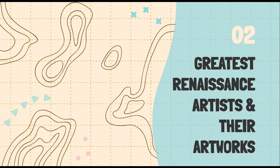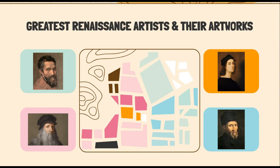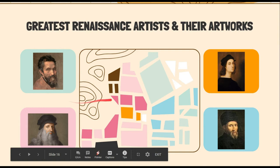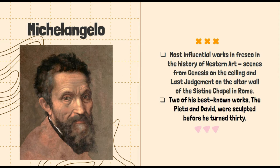Let's proceed to the greatest Renaissance artists and their artworks. We will discuss four artists together with their artworks. Number one, we have Michelangelo. Number two, Leonardo da Vinci. Number three is Raphael. And the last artist is Donatello. We will discuss a summary of their life as an artist and their artworks. Michelangelo is an Italian sculptor, painter, architect, and poet. He was also known as the greatest living artist in his lifetime. Some of his famous works are Pieta, Bacchus, Moses, Dying Slave, Dawn, and Dusk. He is also one of the most influential artists of that time.